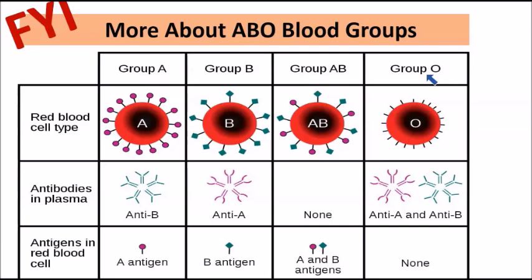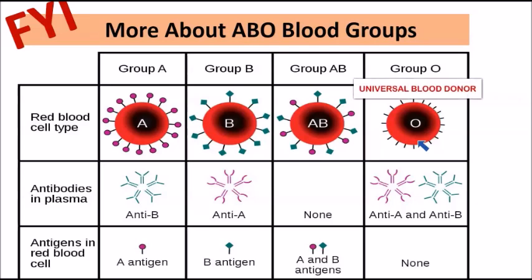Group O is special in that it does not carry any antigens on the surface of the red blood cells. Because of this, group O individuals produce both anti-A and anti-B antibodies, meaning they cannot receive blood from group A, group B, or group AB. However, they are known as the universal donor because they can donate blood to any other blood type.